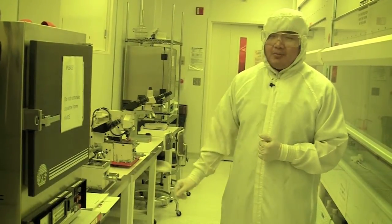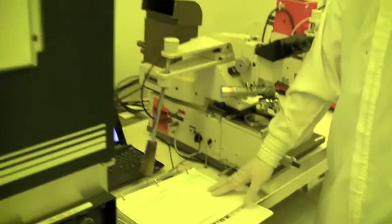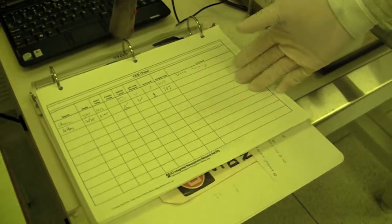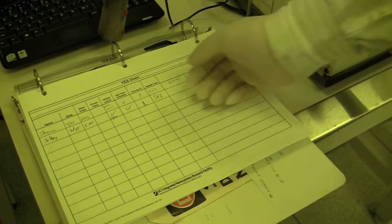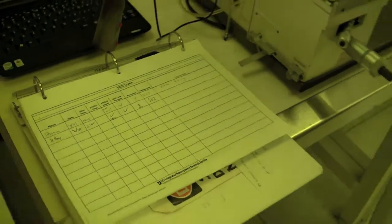Also, you can check the logbook. So the logbook is found next to the system, and you should always be writing down your process after using it. You can see that Jeffrey was the last user and he didn't write anything, so that means it should be okay to use.